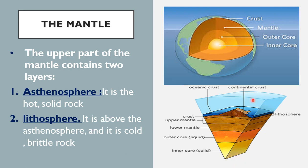The mantle contains two main layers. The first is the asthenosphere, which is the lower mantle — it is hot and solid. The second is the lithosphere, which is the upper mantle — it is cold and brittle. Brittle means it is easy to break into small pieces, like a biscuit or certain types of glass.